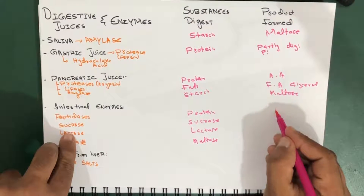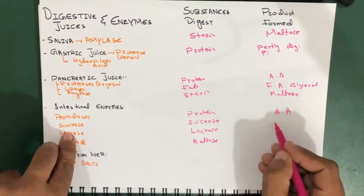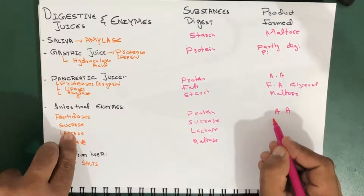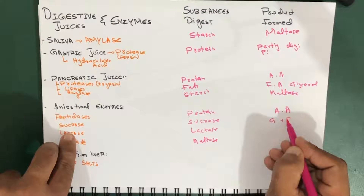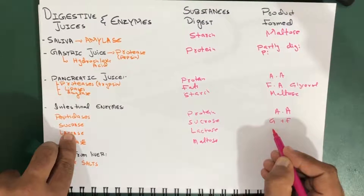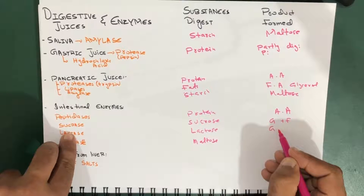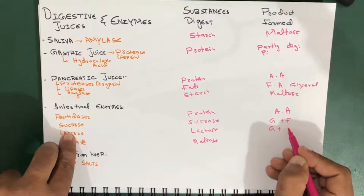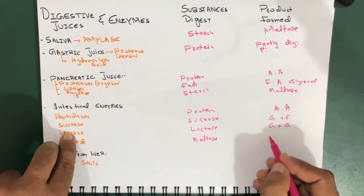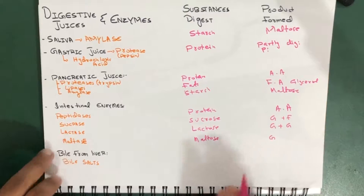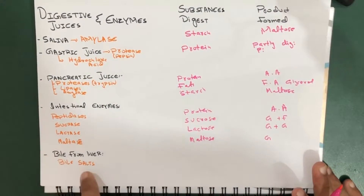Sucrase converts sucrose into glucose plus fructose. Lactase converts lactose into glucose plus galactose. And maltase converts maltose into glucose.